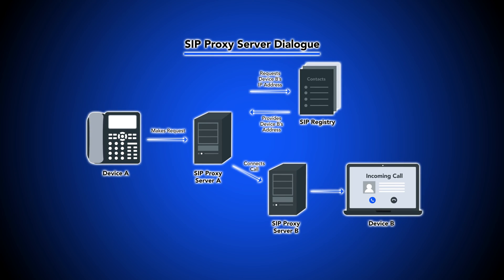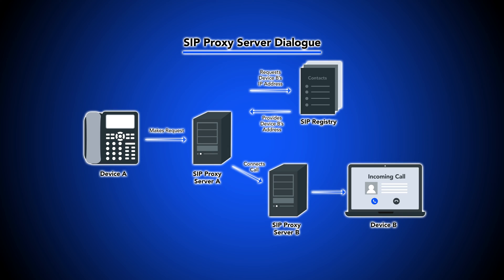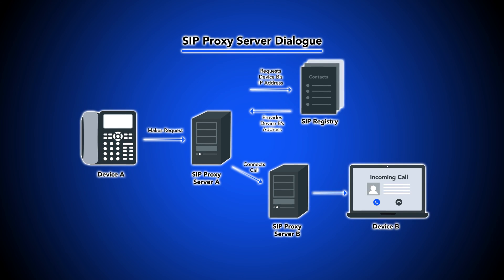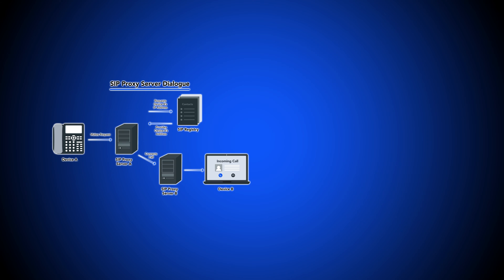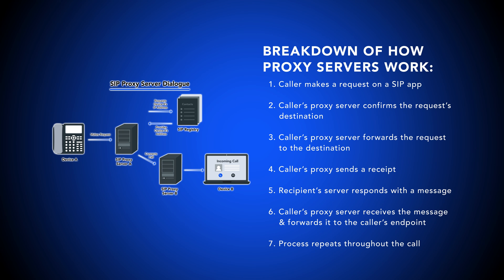Proxy servers not only interact with each other on behalf of users, but with other servers, like location and registrar servers, which are essential to establishing a VoIP call. SIP proxy servers forward and receive requests and data messages to user endpoints or other servers. Each end user in a SIP session typically has their own proxy server, which connects them to VoIP data servers and other end users' proxies. Put simply, SIP proxy servers act as middlemen that carry out the data exchange between endpoints during a SIP session.